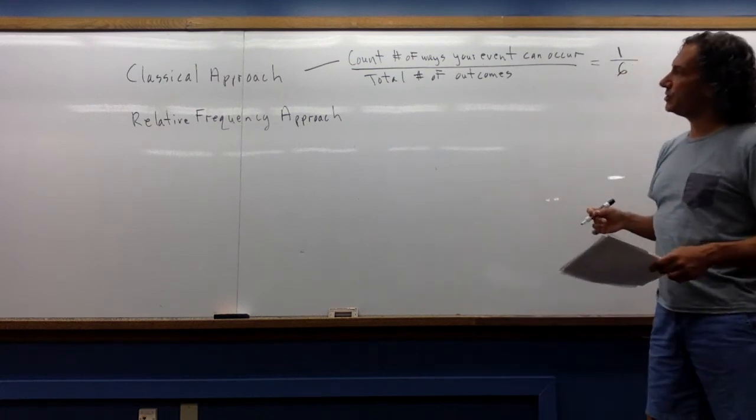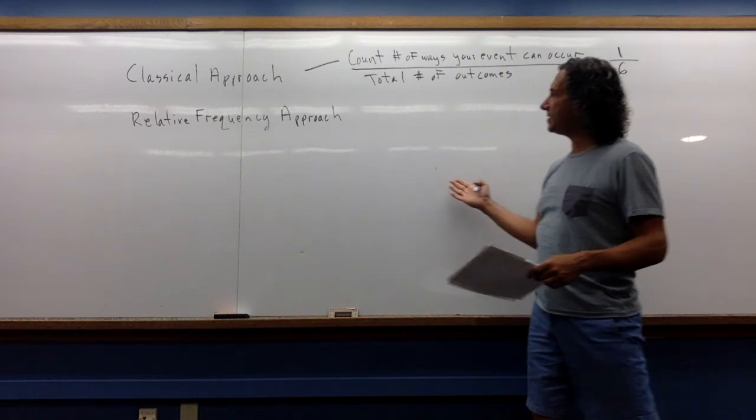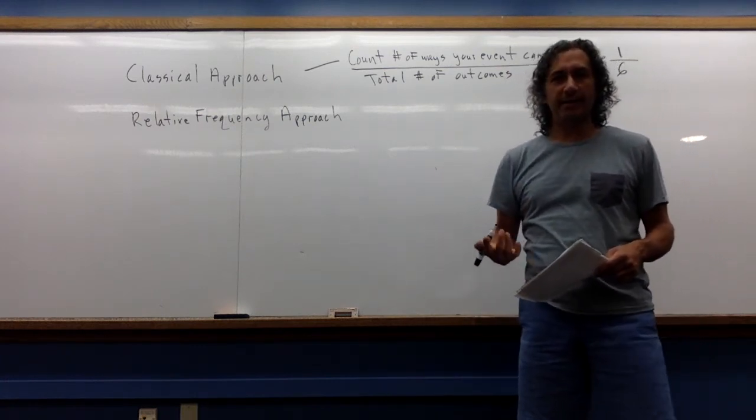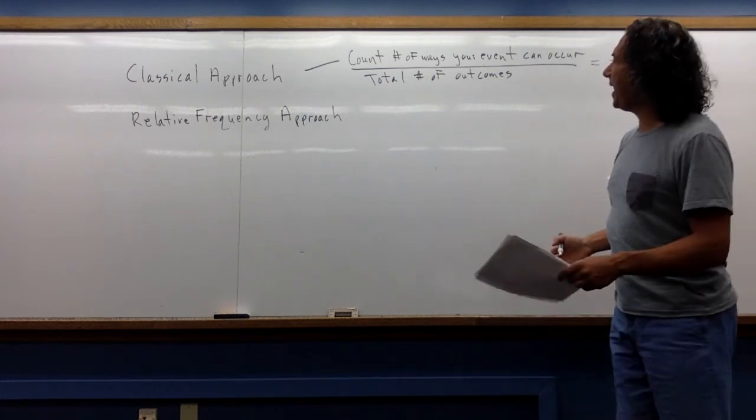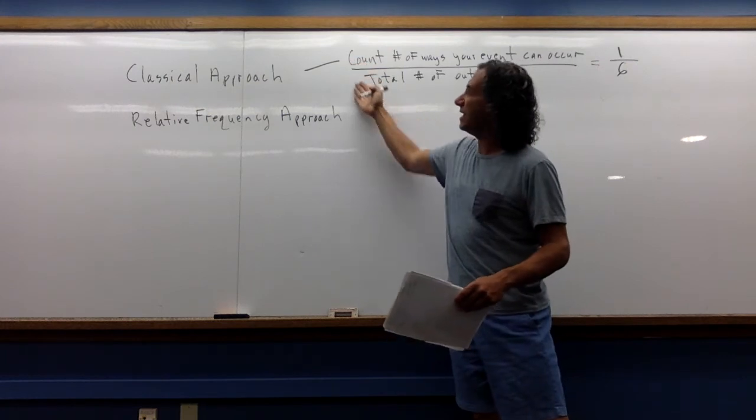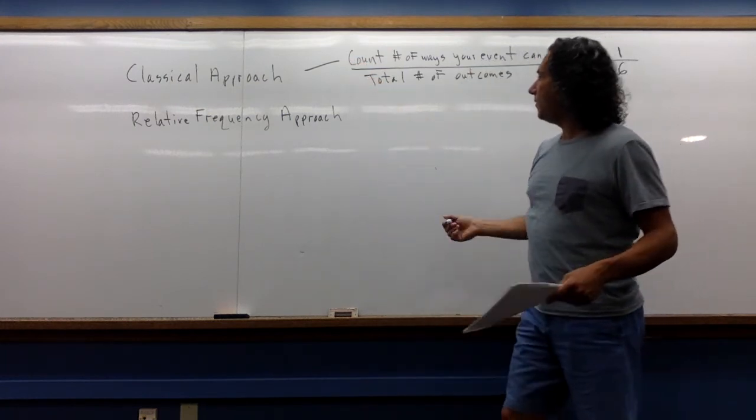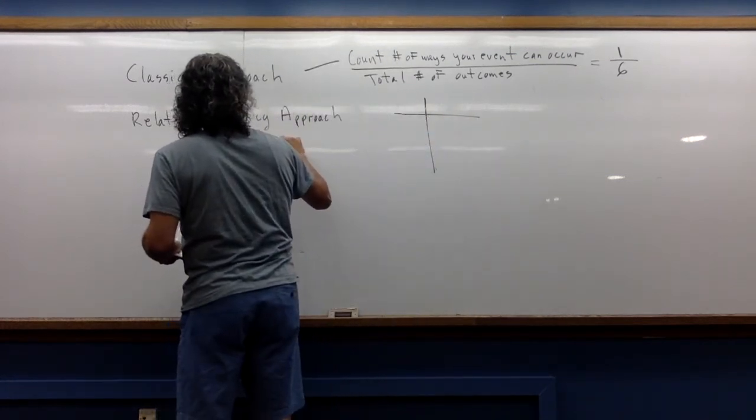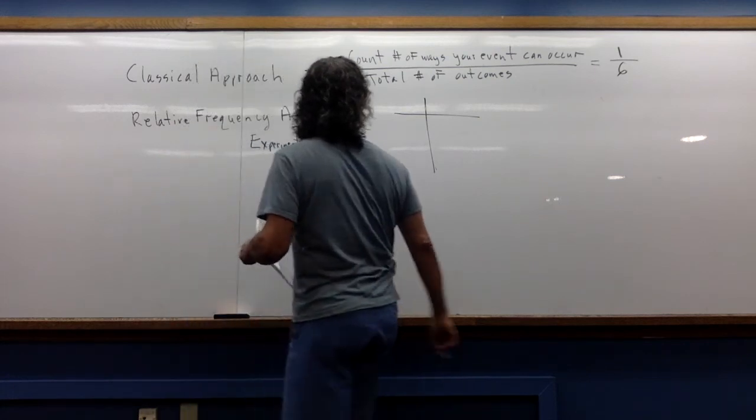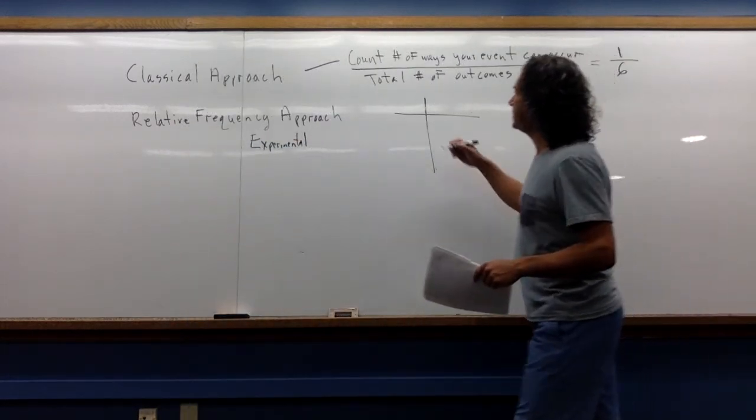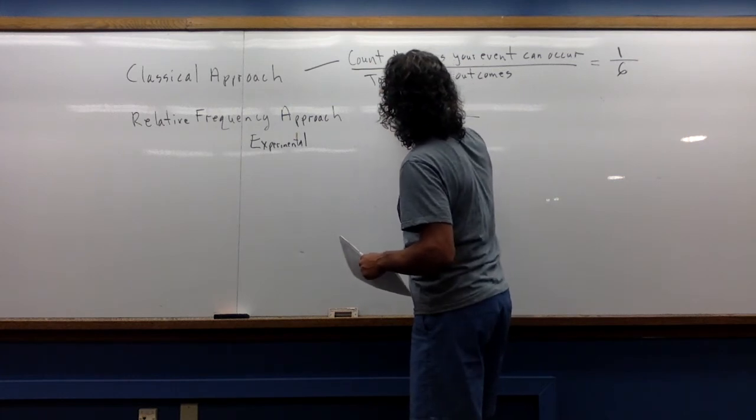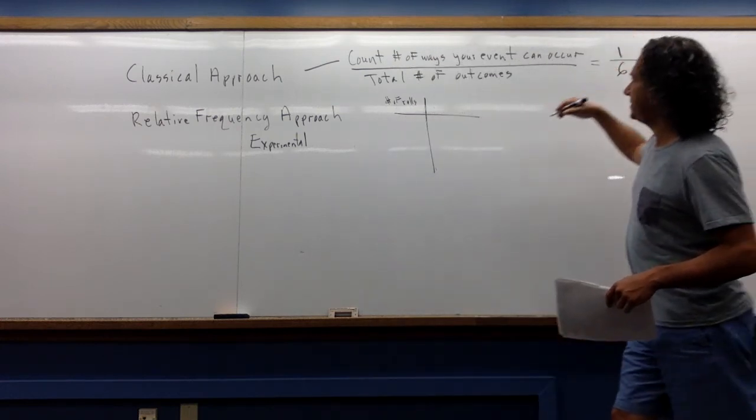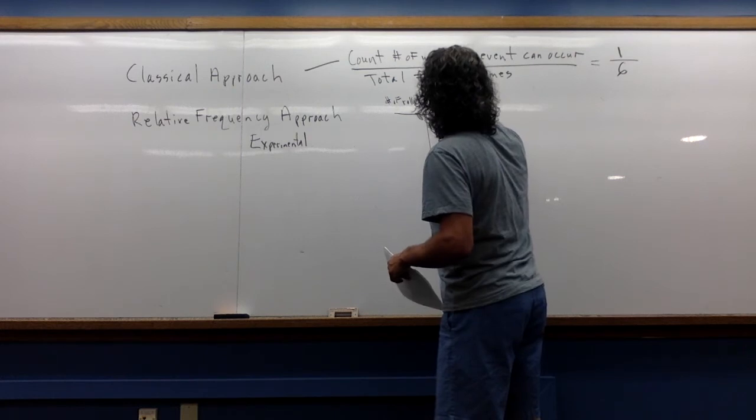In the relative frequency approach, what I'm going to do is something a little bit more experimental. I'm going to repeat the process over and over and over again, and I'm going to see what my ratio gets closer and closer to. So to illustrate that further, let's call this experimental. So let's say this is my number of rolls.